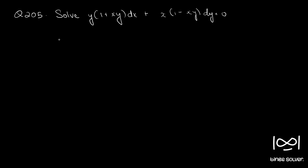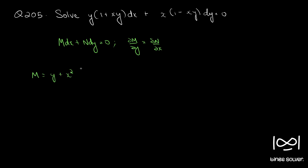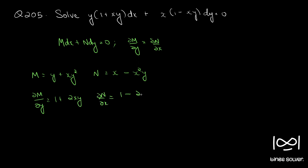We have our differential equation in the form M dx + N dy = 0. First we will check whether the given equation is exact using the necessary and sufficient condition: ∂M/∂y = ∂N/∂x. Our M is y + xy² and N is x - x²y. So ∂M/∂y becomes 1 + 2xy and ∂N/∂x is 1 - 2xy.